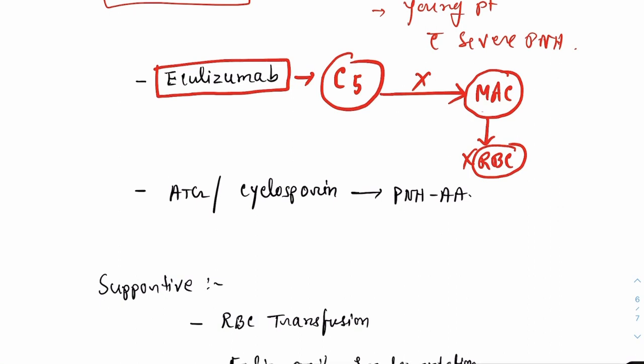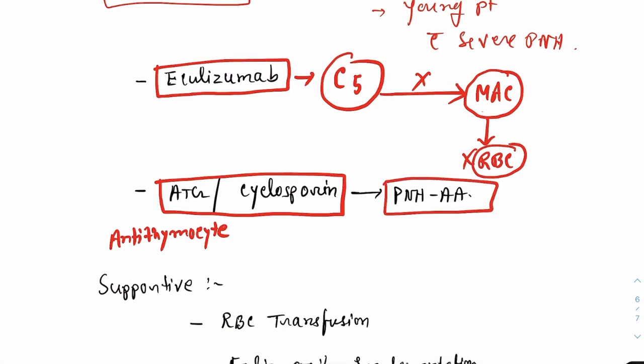The next treatment option is ATG, that is antithymocyte globulin, or cyclosporin. Either of these two drugs or a combination, antithymocyte globulin and cyclosporin combination, can be used in cases of PNH-AA syndrome. These patients are also good candidates for bone marrow transplantation.